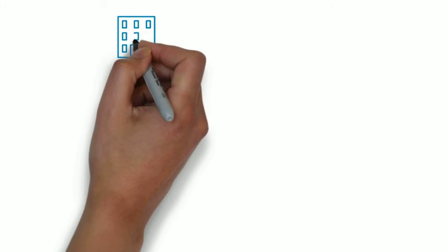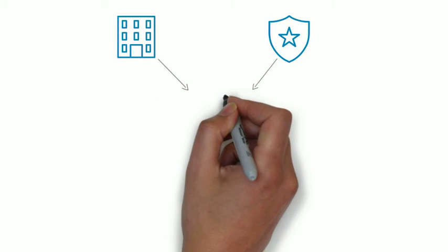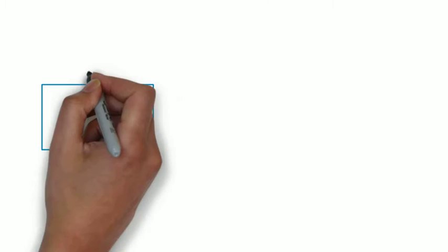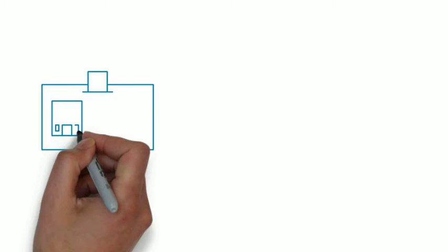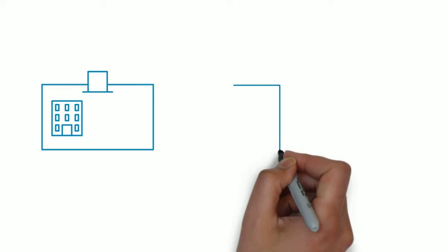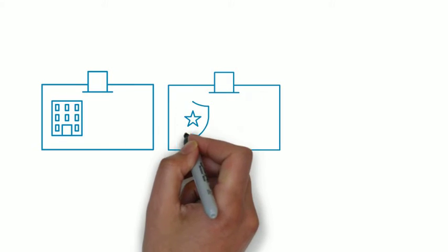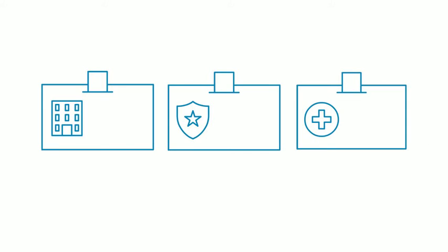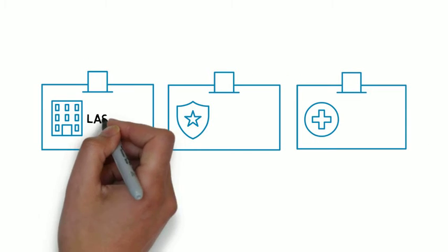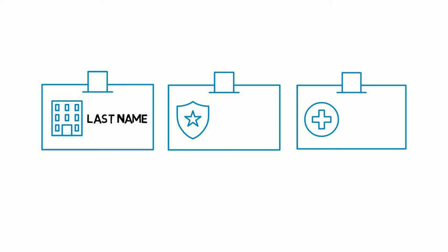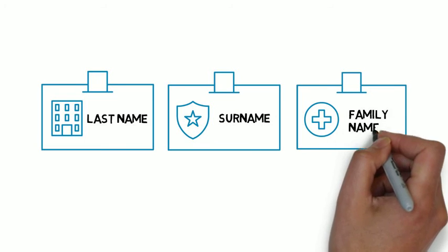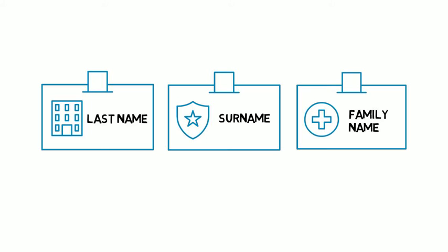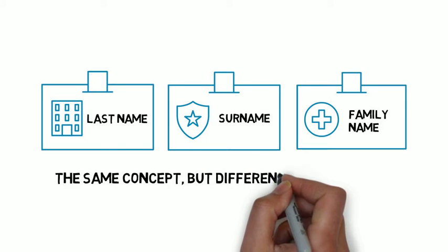Let's say three organizations identify the need to exchange information related to a person. Their information, though similar, is defined differently. All organizations have a concept of a person's last name. One refers to it as last name, while another refers to it as surname, while the third refers to it as family name — the same concept, but different defining terms.